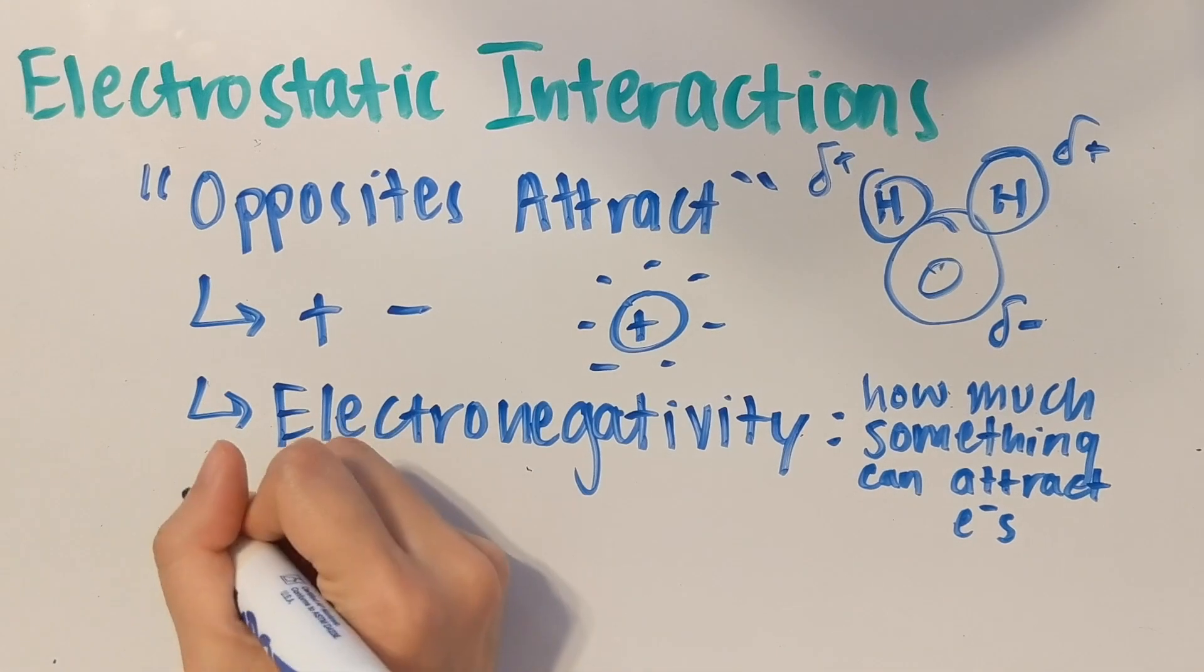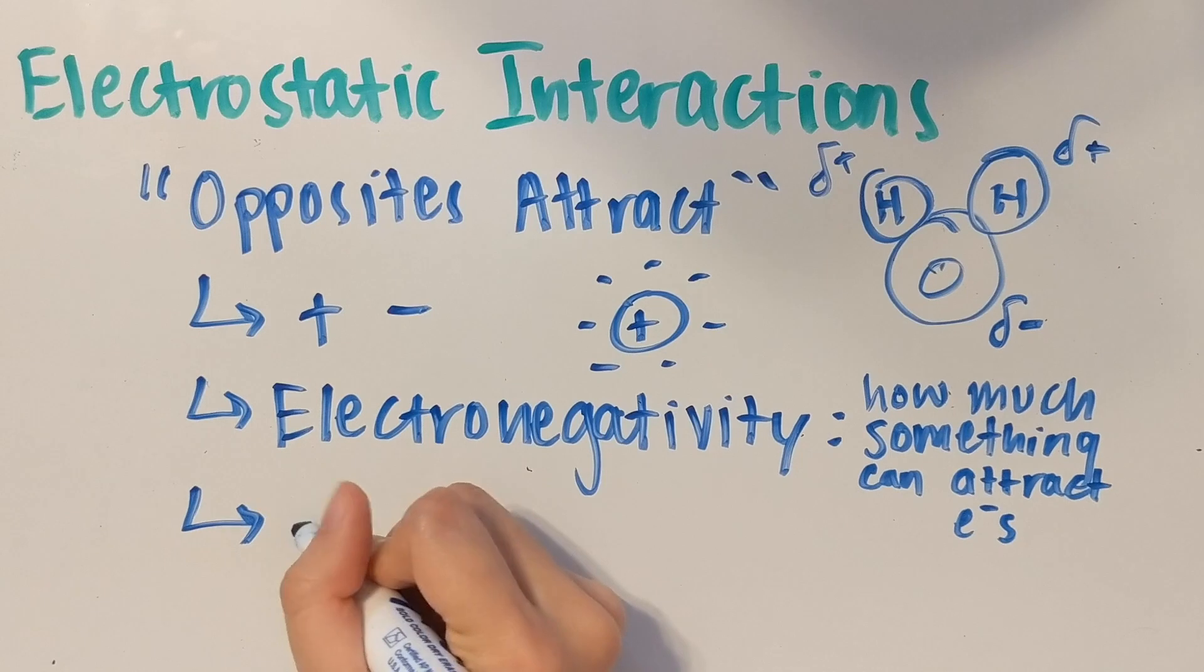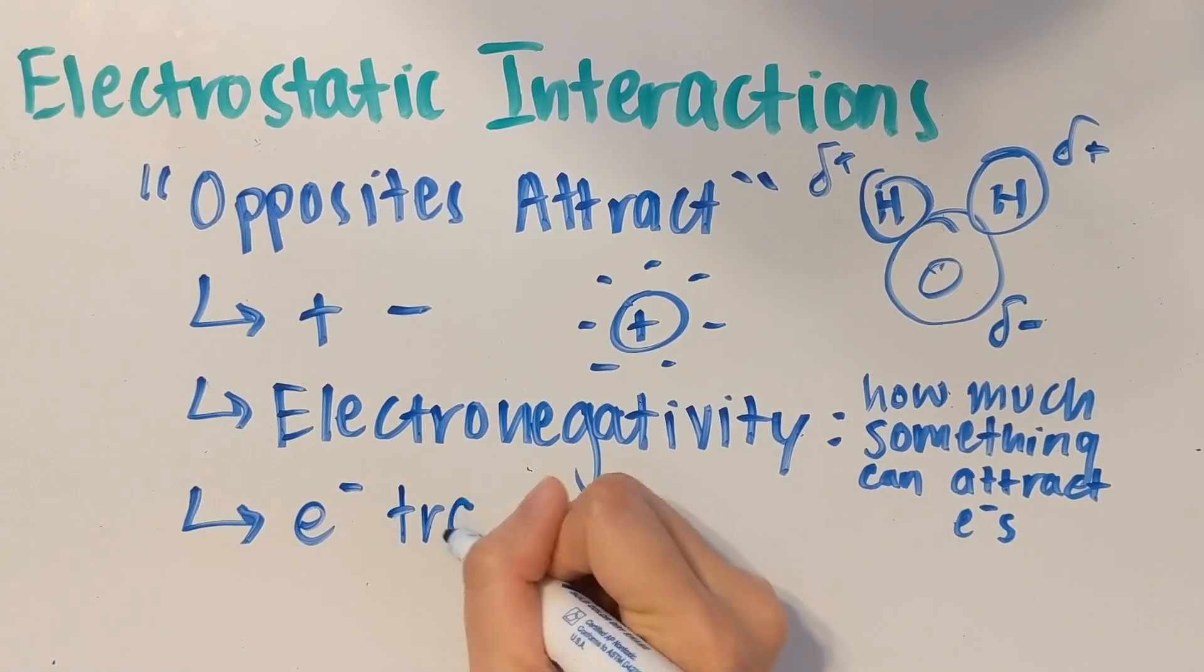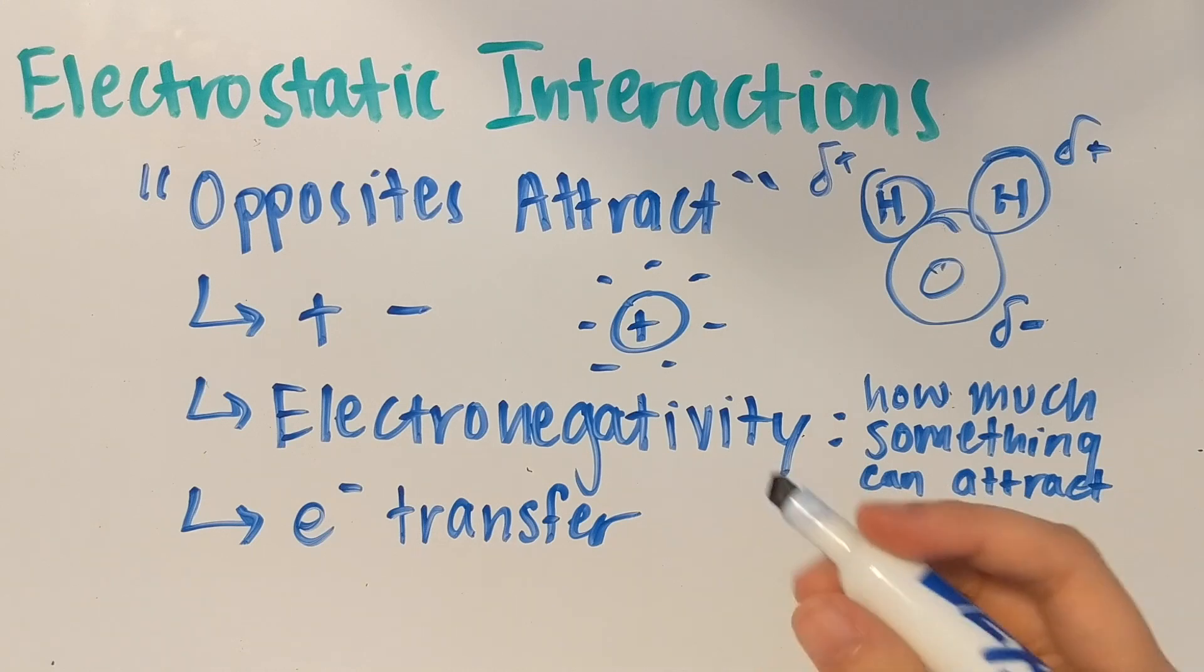In physics class, you'll get a lot of examples of rubbing two different objects together, whether they're charged or neutral, and seeing the interactions between them. This is basically an electron transfer. When you rub something against something else, the electrons gain kinetic energy and thus transfer from one object to another.